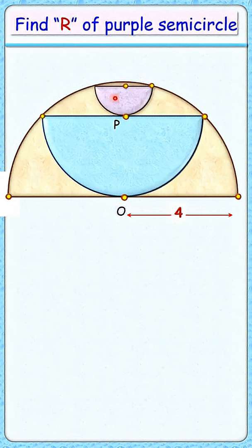Can you find the radius of this purple semicircle? Given is the radius of brown semicircle is 4cm. Let's check the solution.